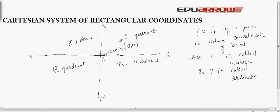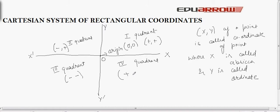In the first quadrant, both x and y are positive. In the second quadrant, x is negative and y is positive. In the third quadrant, both x and y are negative. In the fourth quadrant, x is positive and y is negative.